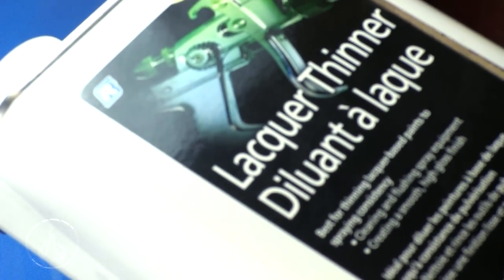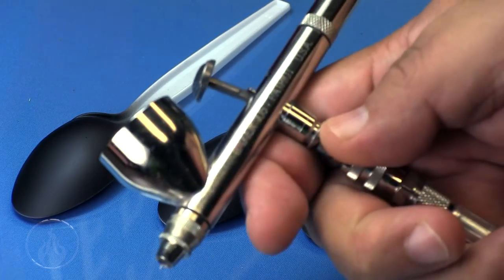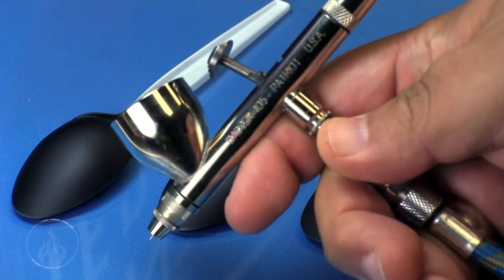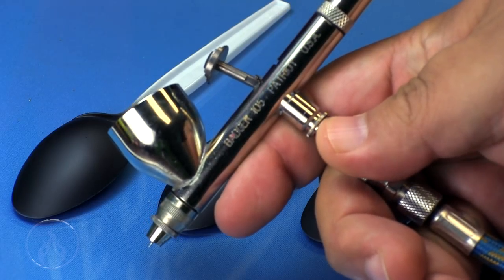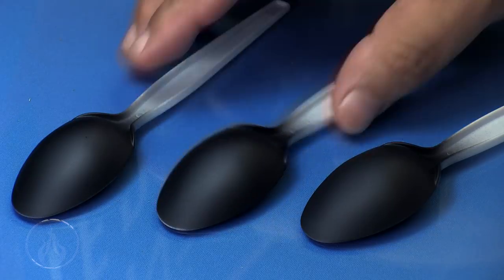I'm going to use some lacquer thinner to thin it out just a little bit. I'm going to be using a Badger Patriot 105, spraying this initially at 20 psi just to see how it goes. I've never done this through the airbrush and so I was a little bit concerned.